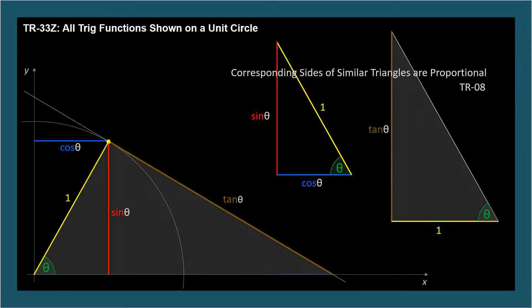Corresponding sides of similar triangles are proportional. We covered this in TR-08 if you need a review. We'll use these pairs of corresponding sides to set up the equation. Sine theta over cosine theta equals tan theta over 1, which is just tan theta, and sine theta over cosine theta is indeed the definition of tangent.